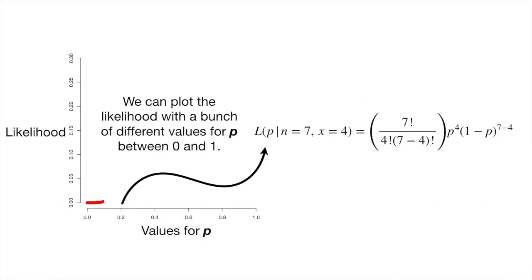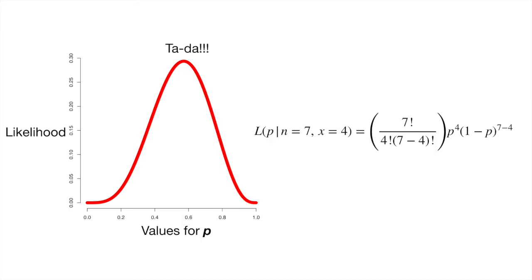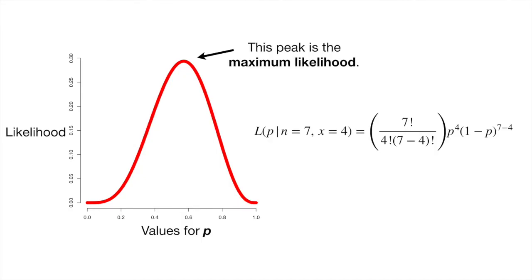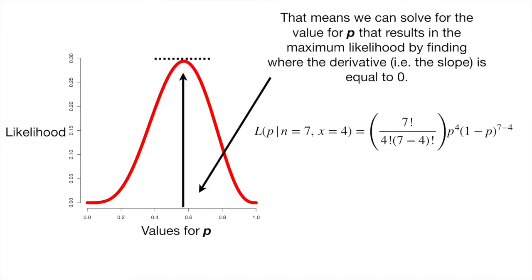We can plot the likelihood with a bunch of different values for p between 0 and 1. This peak is the maximum likelihood — the slope of the curve at the peak is 0. That means we can solve for the value of p that results in the maximum likelihood by finding where the derivative, i.e. the slope, is equal to 0.